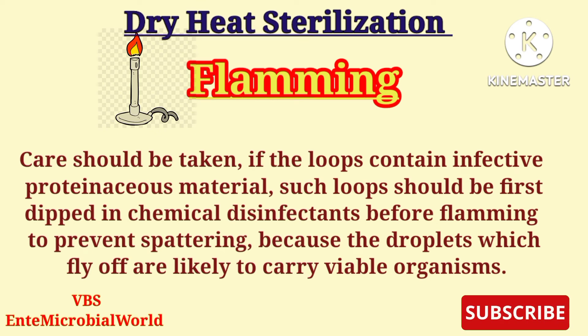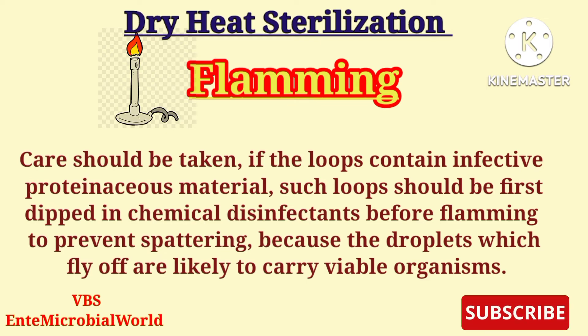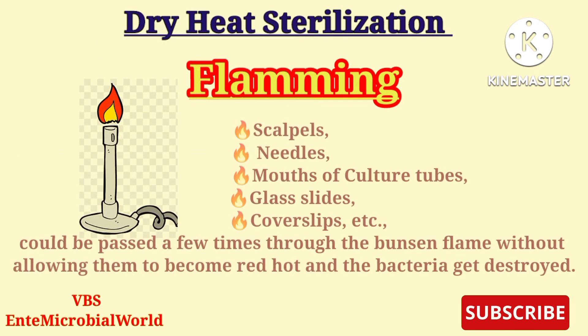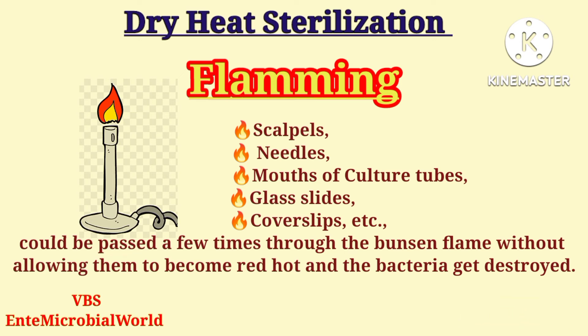Care should be taken if the loops contain infective or proteinaceous material. Such loops should first be dipped in chemical disinfectants before flaming to prevent spattering, because the droplets which fly off are likely to carry viable organisms. Scalpels, needles, mouths of culture tubes, glass slides, cover slips, etc., can be passed a few times through the Bunsen flame without becoming red hot, and the bacteria get destroyed.